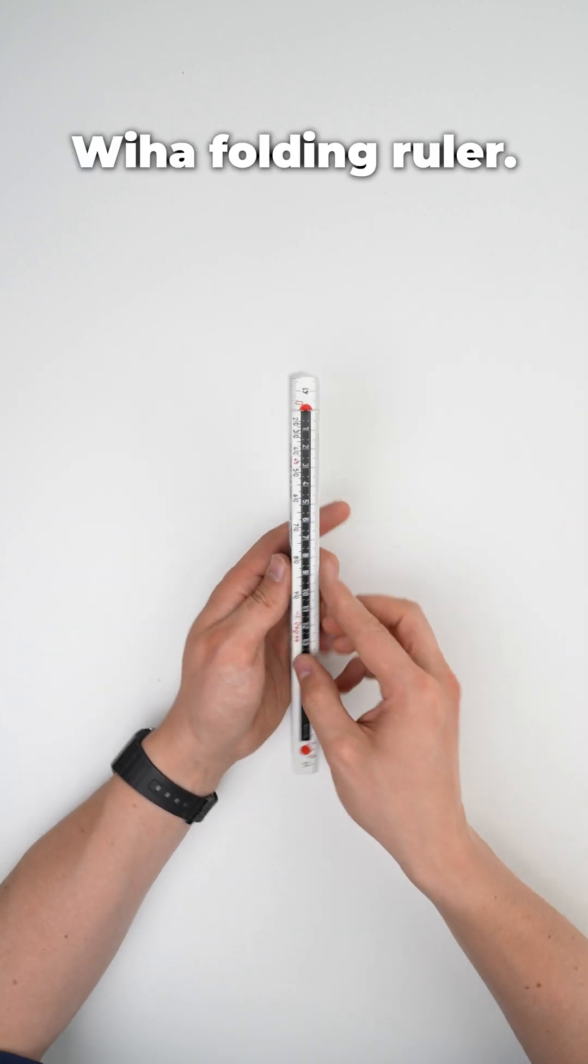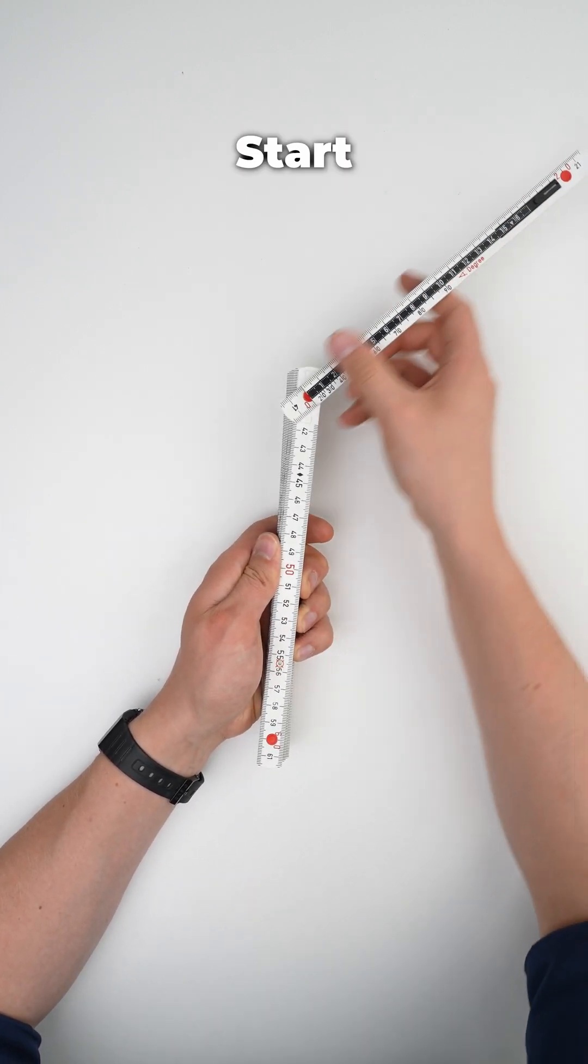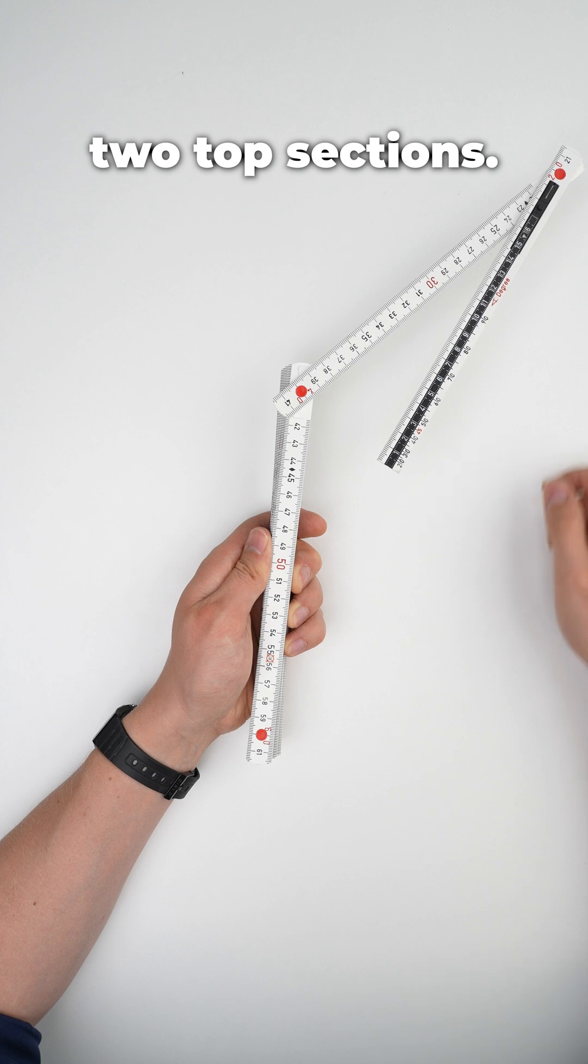Measuring angles with Viha folding ruler. Start by unfolding two top sections.